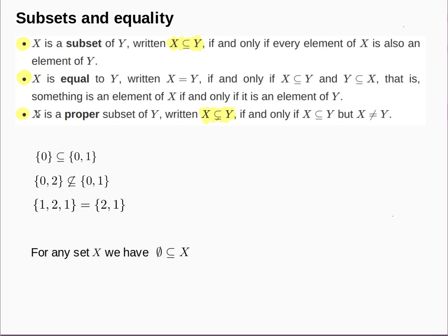Let's run through some examples of subsets. The set on the left is a subset of the set on the right because its only element, 0, is also an element of the set on the right. In the next example, the set on the left is not a subset of the set on the right because it contains an element — specifically the number 2 — which is not in the set on the right.